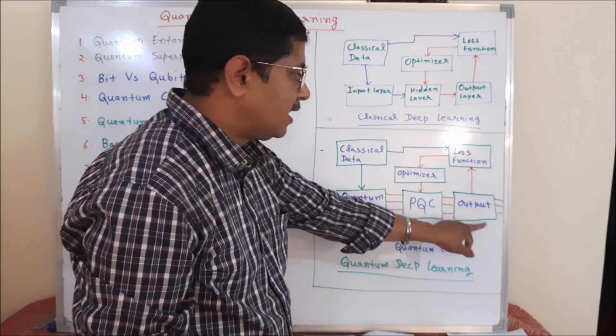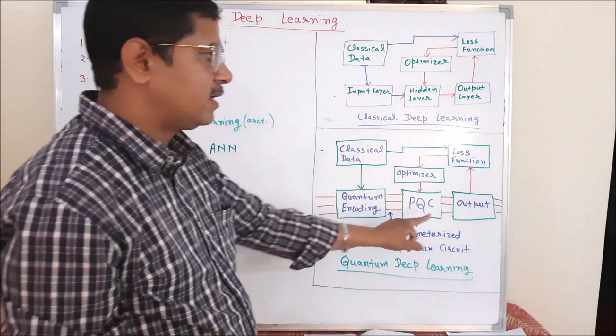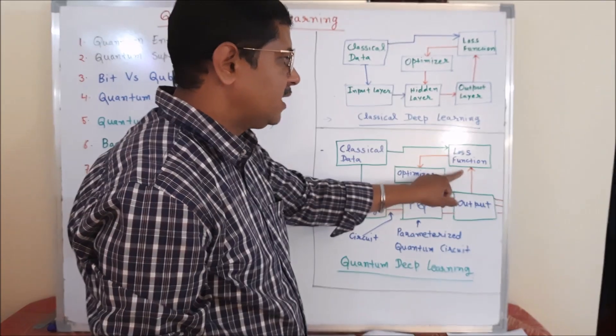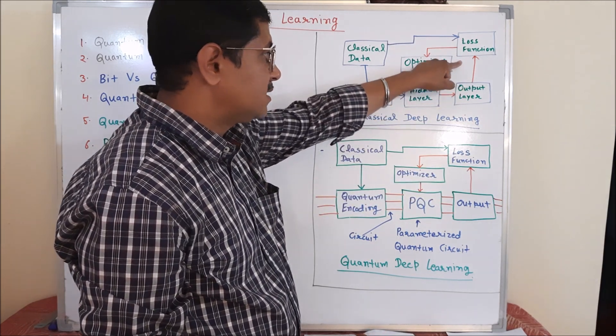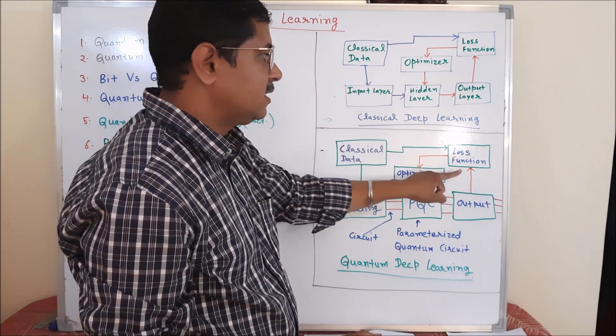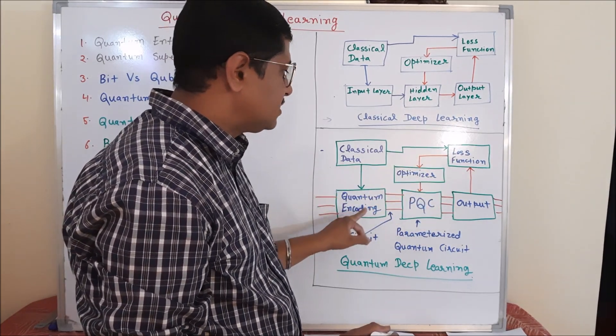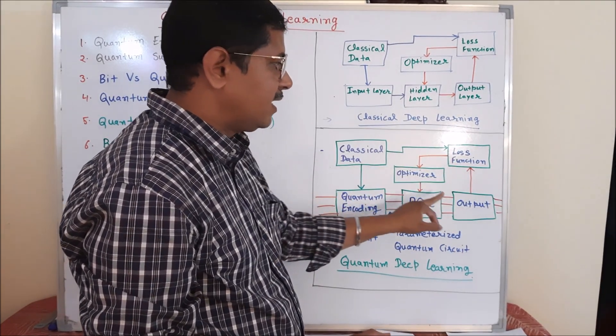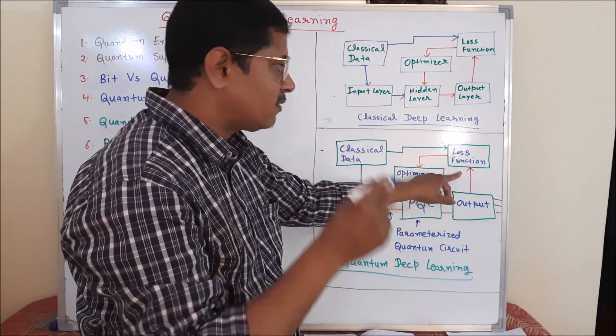And from there, we pass it through the output layer. Output layer is again the parametrized quantum circuit. Then we apply a loss function. The loss function is also different from the classical deep learning loss function. It checks the similarity or differences between the actual value and the predicted value at output layer through the quantum circuit.